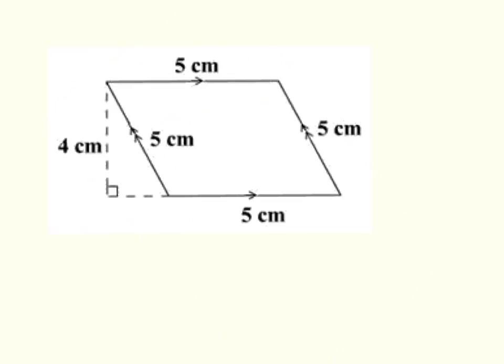Here we have a rhombus, we know it's a rhombus because they're all the same size, and we have pairs of parallel, so we have a perpendicular distance there of 4. So area equals base times height, 5 centimeters times 4 centimeters, 20 centimeters squared.